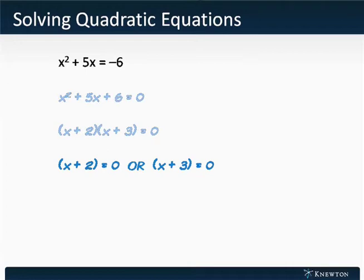So in this case, we can then say x plus 2 equals 0, or x plus 3 equals 0. Now solving each of these two equations for x gives us x equals negative 2 or x equals negative 3. In this case, we have two solutions.